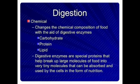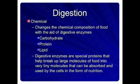Second is chemical digestion, which changes the chemical composition of food with the aid of digestive enzymes acting on carbohydrates, proteins, and lipids. Digestive enzymes are special proteins that help break up large molecules of food into very tiny molecules that can be absorbed and used by the cells in the form of nutrition.